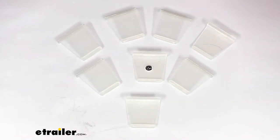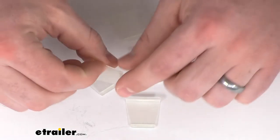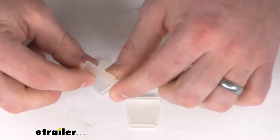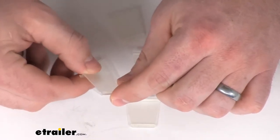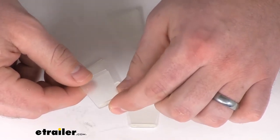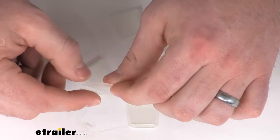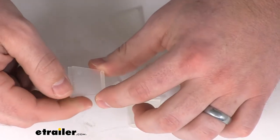Hi there, I'm Michael with eTrailer.com. Today we're going to take a quick look at the RV window screen finger pulls. These are a nice thin transparent plastic that will fit into the spine of your RV window screens and allow you to easily install and remove the screens from your RV windows.